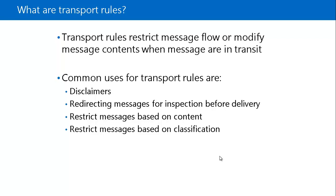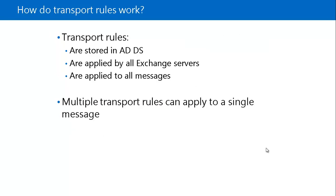Any transport rules you create are applied automatically by all servers running Exchange Server 2016 in your organization. Transport rules are stored in Active Directory Domain Services so that every Exchange Server has access to them. If your organization uses multiple servers in different Active Directory sites, when you create a new transport rule there can be a short propagation delay until Active Directory site replication has completed.